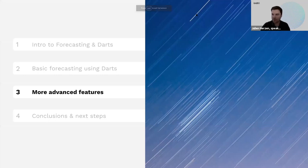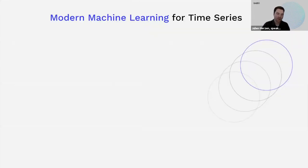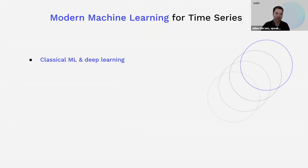All right. Thank you, Francesco. I hope everyone can hear me and see my screen. Please let me know if that's not the case. So I want to give an overview of some of the more advanced features that we are also proposing in DARTS. One of the most important things we're trying to do here is providing modern machine learning functionalities for time series. On the one hand, we want support for both classical machine learning and deep learning models. In DARTS, you can plug in your favorite scikit-learn regressors and get forecasts based on that. But also, we offer a collection of state-of-the-art deep learning models, and we are always trying to follow the research and add more models.